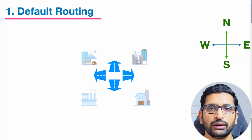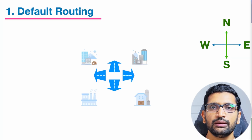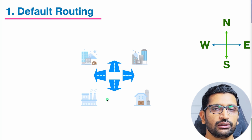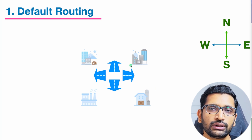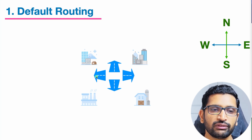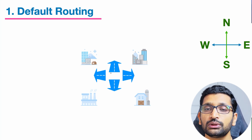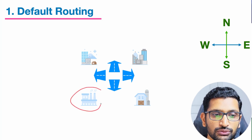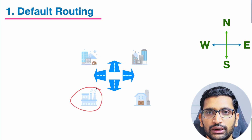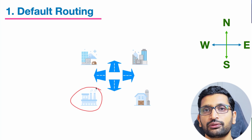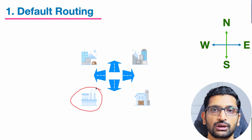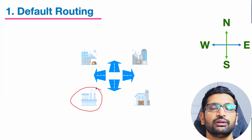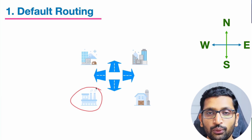Let's start with default routing. To explain it, I'm taking a very basic example. Consider there is a city with only four streets designated for four directions — east, north, west, and south. I am new to the city and I want to navigate to the factory. The factory is situated in the southern part, so someone will say: follow the south street and you will eventually reach the factory, because there is only one street going south. That's what we call a default route.